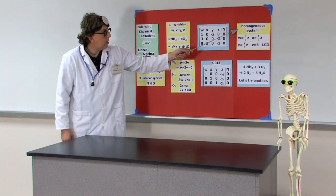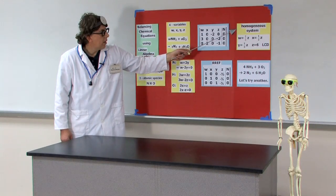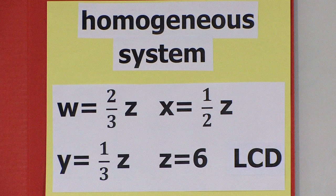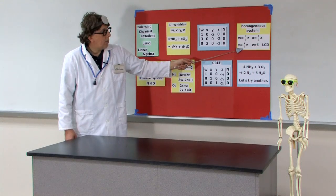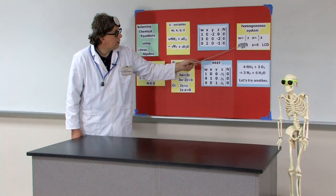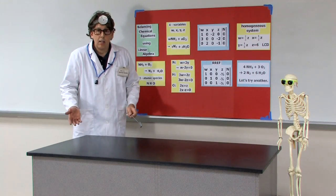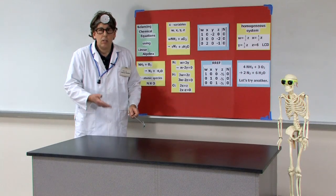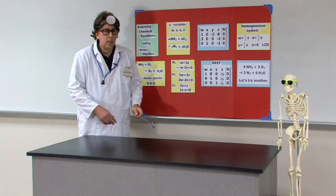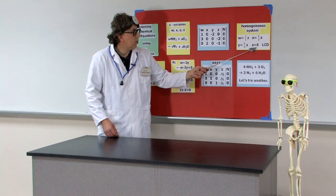And here are the final relationships for our homogeneous system. W is now 2 thirds Z. X is equal to 1 half Z. Y equals 1 third Z. A least common denominator for those fractions would be 2 times 3, or 6. So that's why we're setting Z equal to 6.